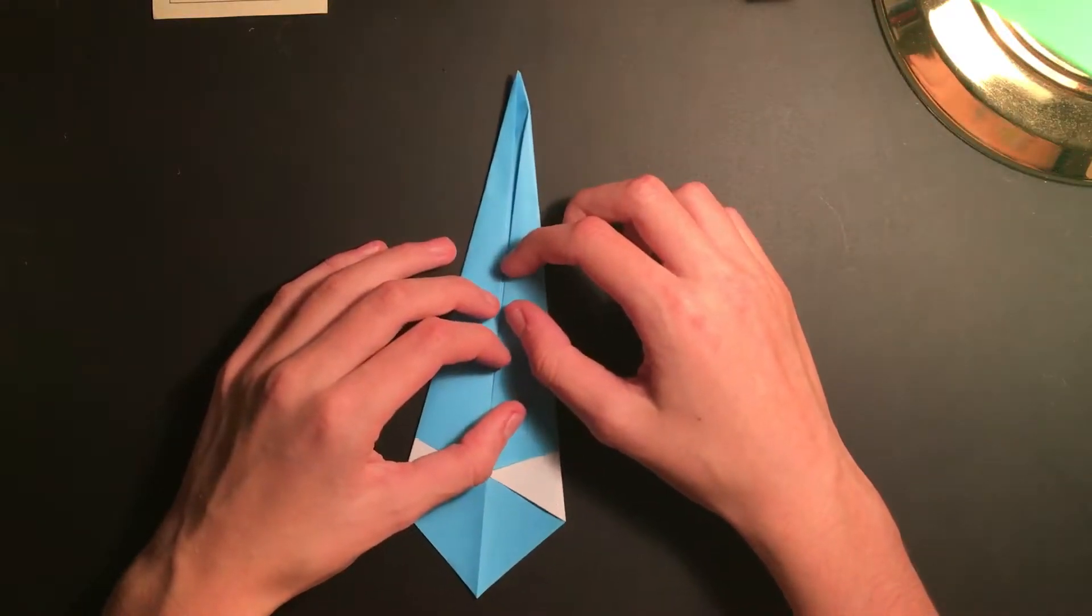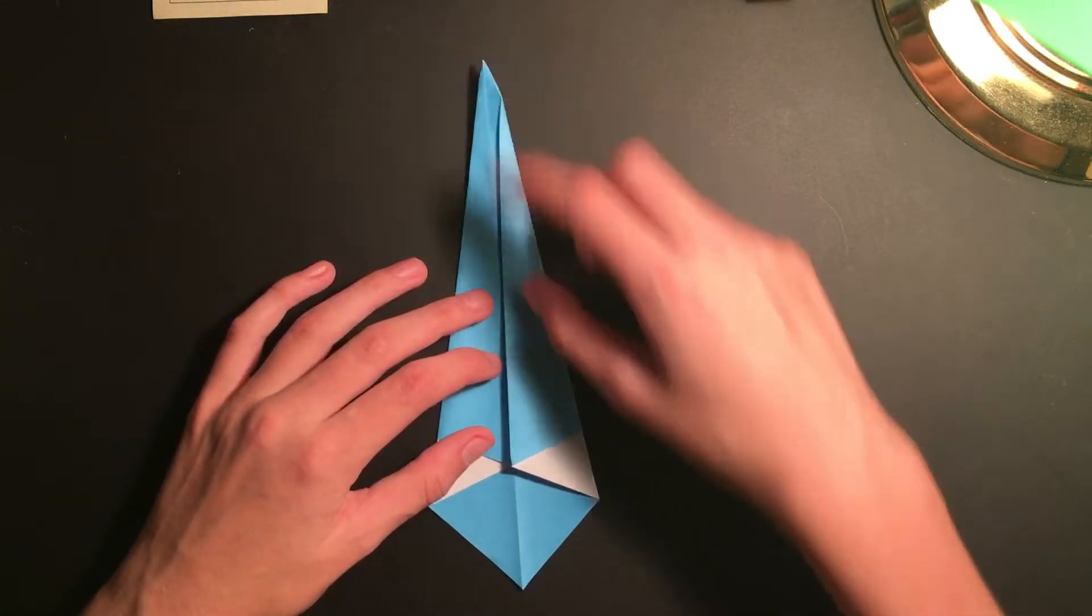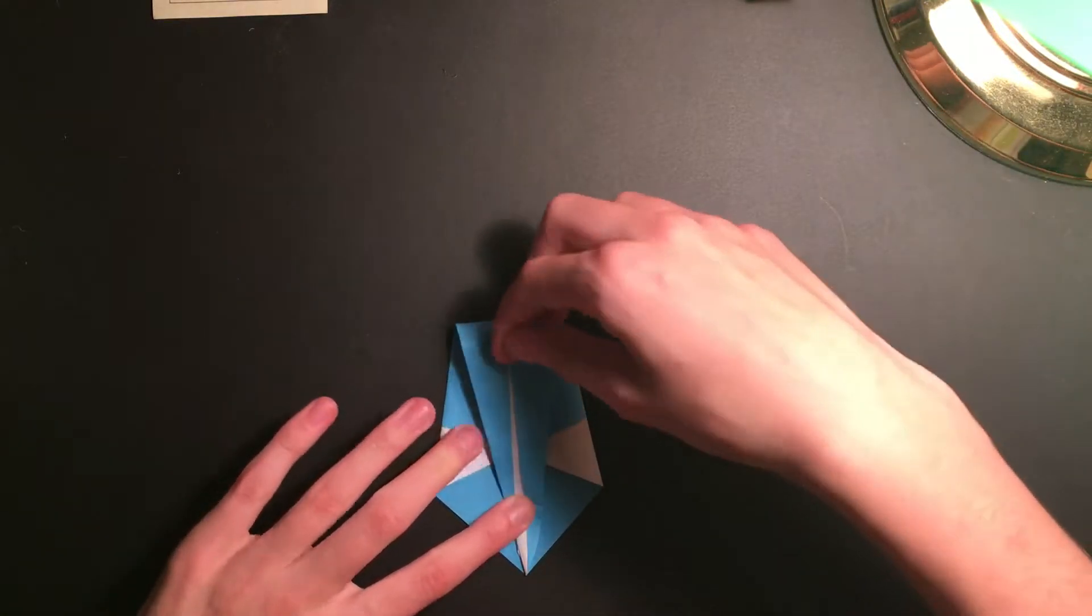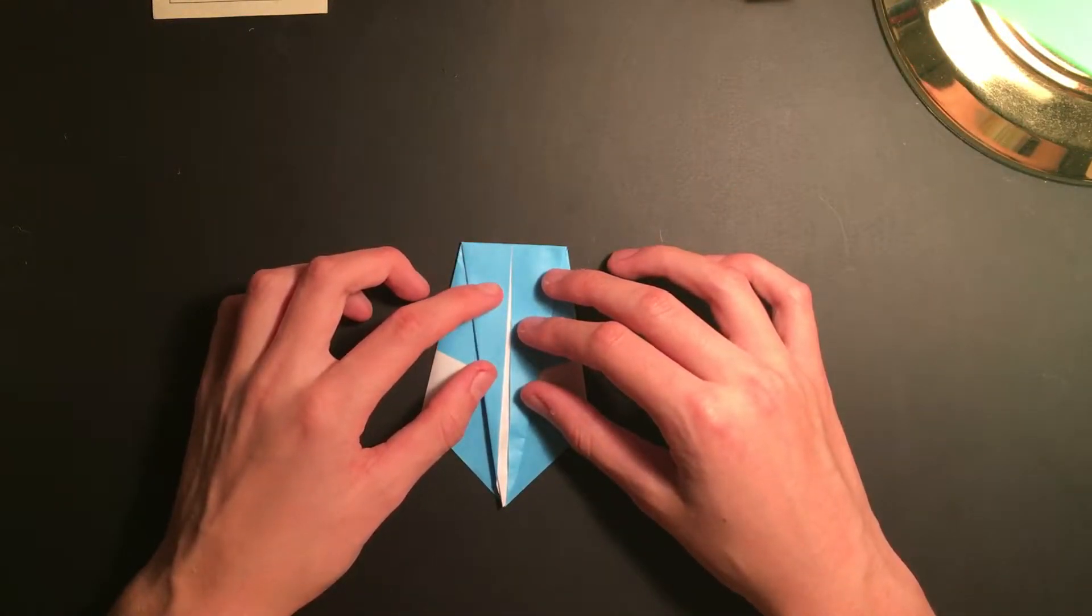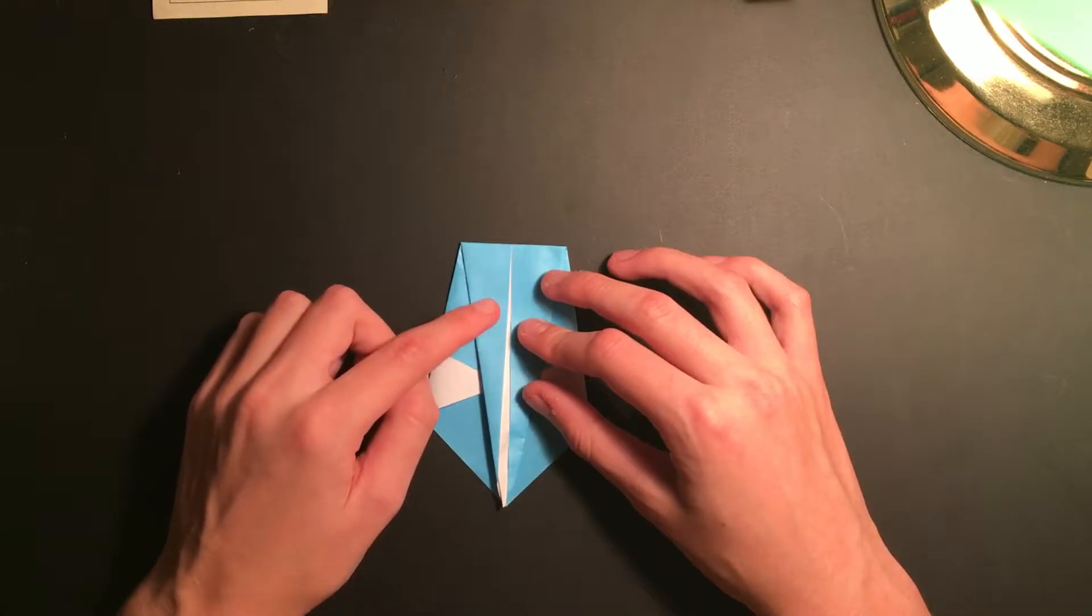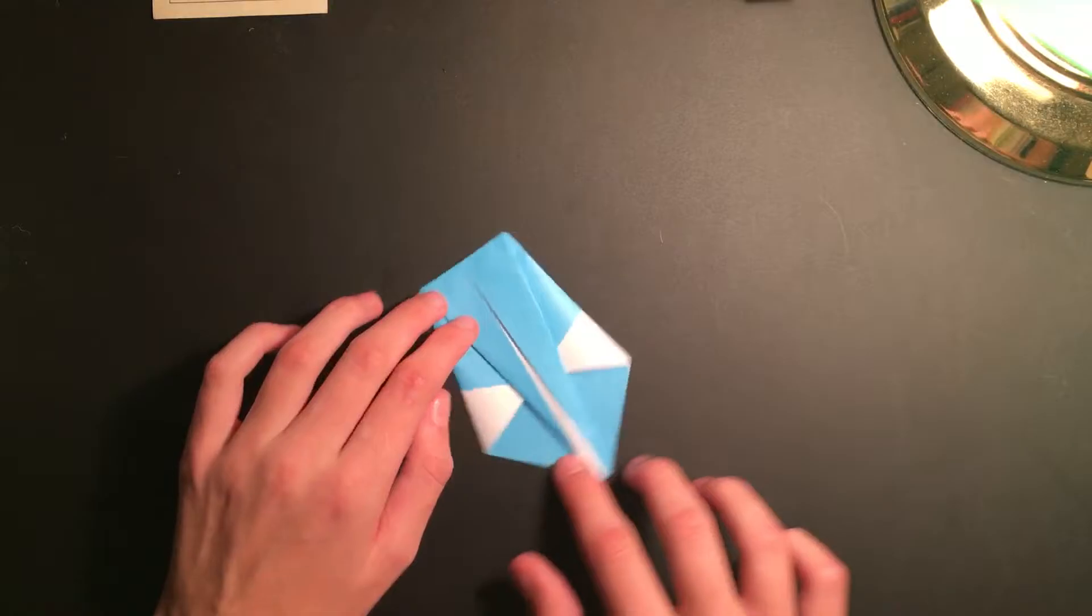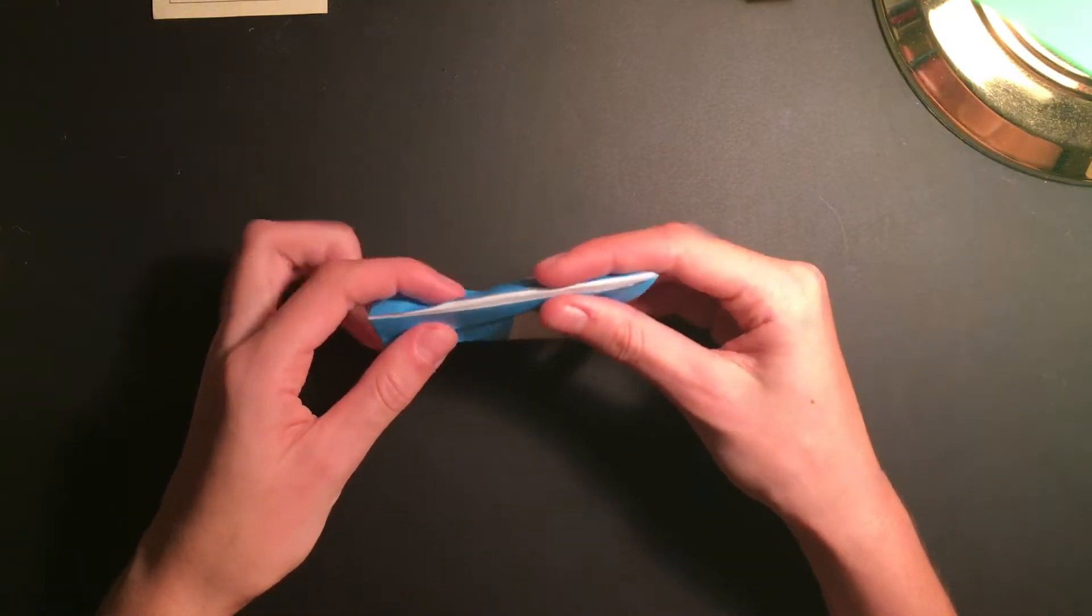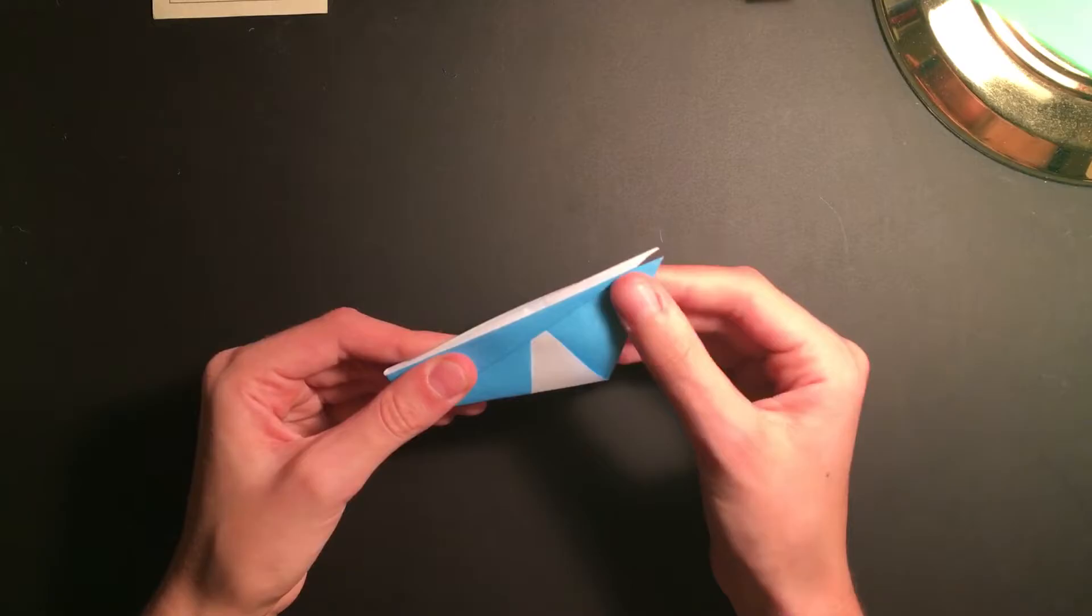Now with the point facing away from you, bring the top point to the back bottom point. And you might see a little white on the chest of the swan, that's okay, it just means that your first folds were not directly to the center crease. Go ahead and rotate your model 90 degrees and fold completely in half.